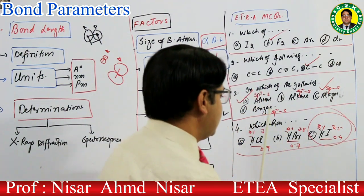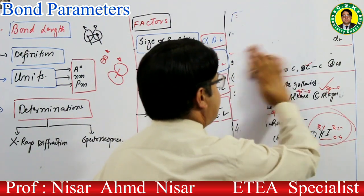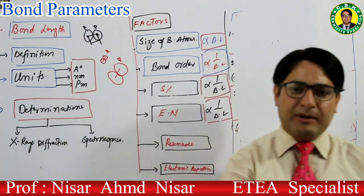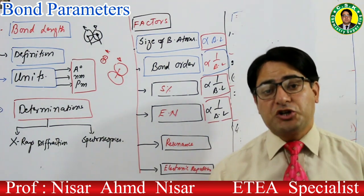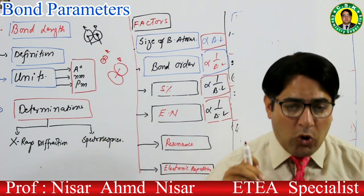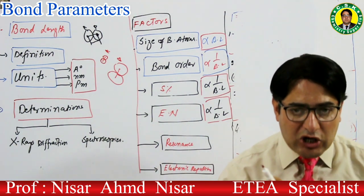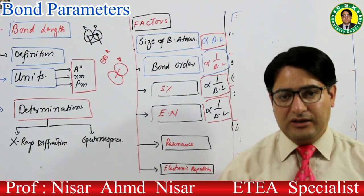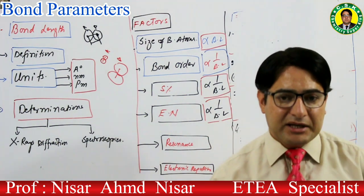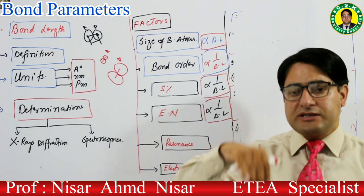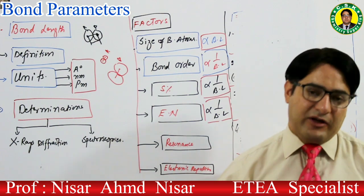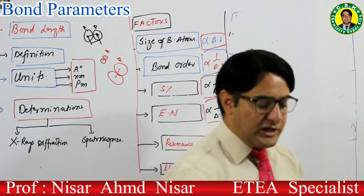اگلا factor — resonance۔ Resonance اور hyperconjugation بھی bond length کو affect کرتی ہیں۔ Resonance ہونے سے single bond shorter ہو جاتا ہے — یعنی single bond کی bond length decrease ہوتی ہے اور double یا triple bond کی bond length increase ہوتی ہے۔